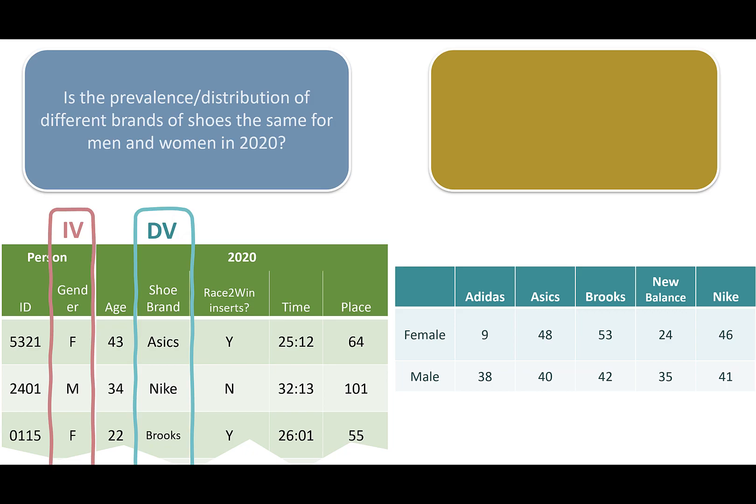For females, here's how many different people were wearing different brands of shoes, and for males, here's how many people were wearing different brands of shoes. How would you tell if the relative prevalence of the different brands is the same between females and males? Just eyeballing it, it looks like for men, they're pretty equally distributed across the different types of shoes. For women, it looks like Adidas is really unusual to see, and New Balance is not so common. ASICs, Brooks, and Nike are the most common types. So it looks like their distributions are different. What kind of test would you run to see if they were different?